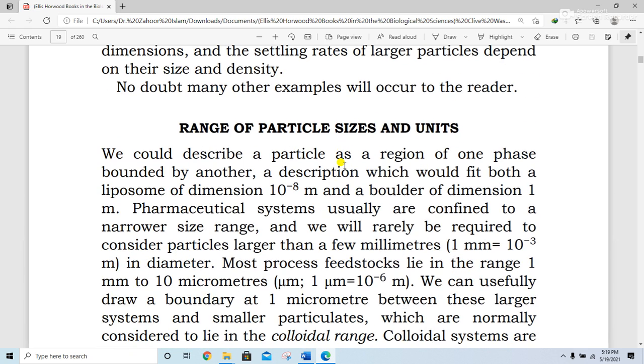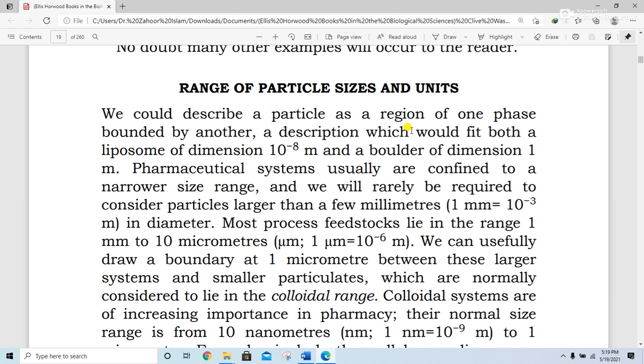Range of particle sizes and units. We could describe a particle as a region of one phase bounded by another, a description which would fit both a liposome of dimension 10^-8 meters and a boulder of dimension 1 meter. Pharmaceutical systems usually are confined to a narrower size range and we will rarely be required to consider particles larger than a few millimeters. 1 mm equals 10^-3 meters in diameter. Most process feedstocks lie in the range 1 mm to 10 micrometers. 1 micrometer equals 10^-6 meters. We can usefully draw a boundary at 1 micrometer between these larger systems and the smaller particulates which are normally considered to lie in the colloidal range.